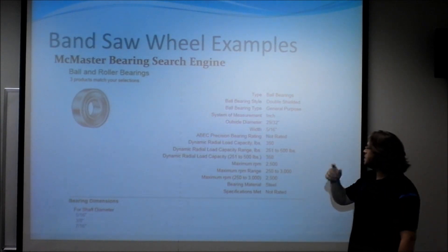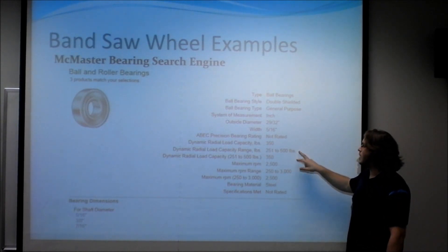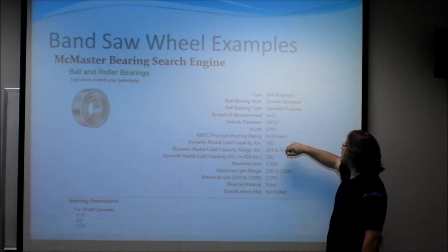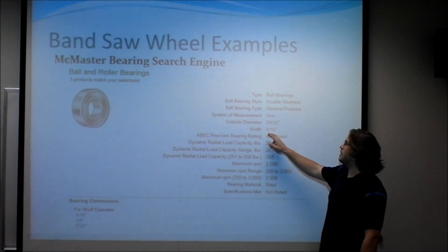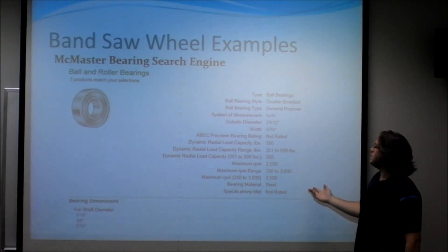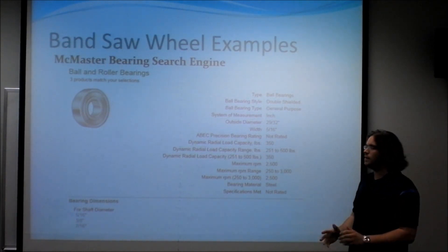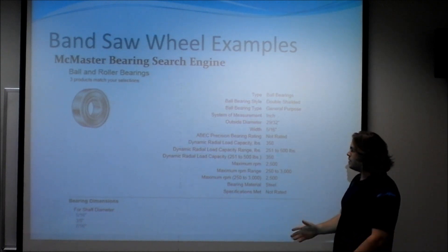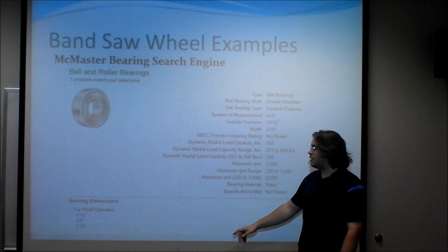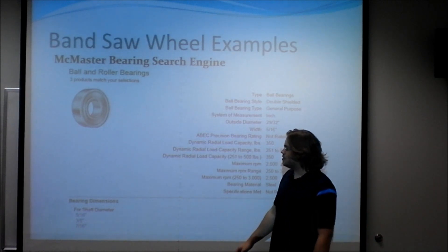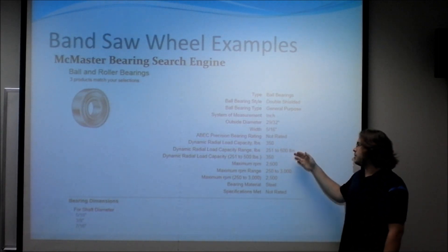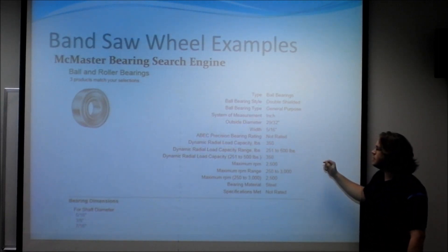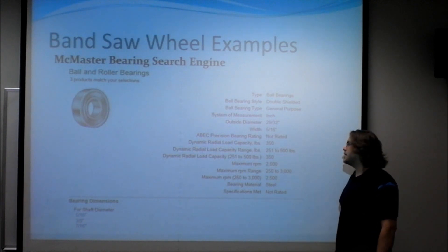When putting these two speeds, the speed and load, into McMaster, we're going to get that the smallest outer diameter that we can have is 2932. We can choose a larger size, and the smallest width we can have is 516. Obviously, the width of the bearing would be ideal if it was the same width as the wheel, so that could be calibrated for that. In addition, the inner diameter, we have three possible choices: 516, 3.8, and 716. We know that at any of these three sizes, we will be able to hold between 250 to 500 pounds, and that we will reach the desired speed.